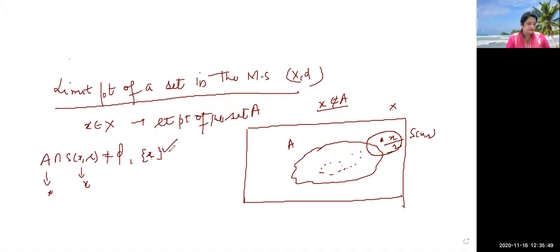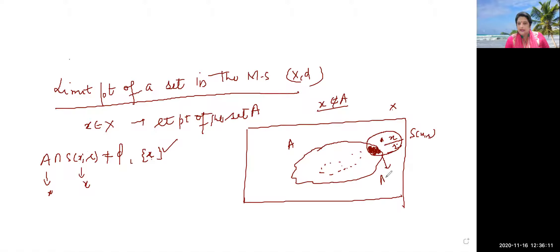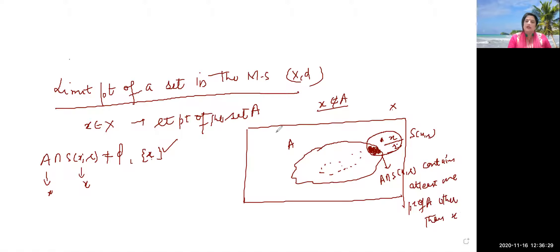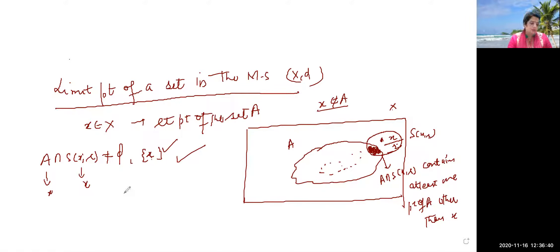Now look at the definition in the book. In metric space X, A contained in X is any set. Then x belonging to X is called the limit point of the set A if each ball centered at x contains at least one point — meaning A ∩ B(x, r) contains at least one point of A other than x. If every ball satisfies this condition, then that point is called the limit point of the set.